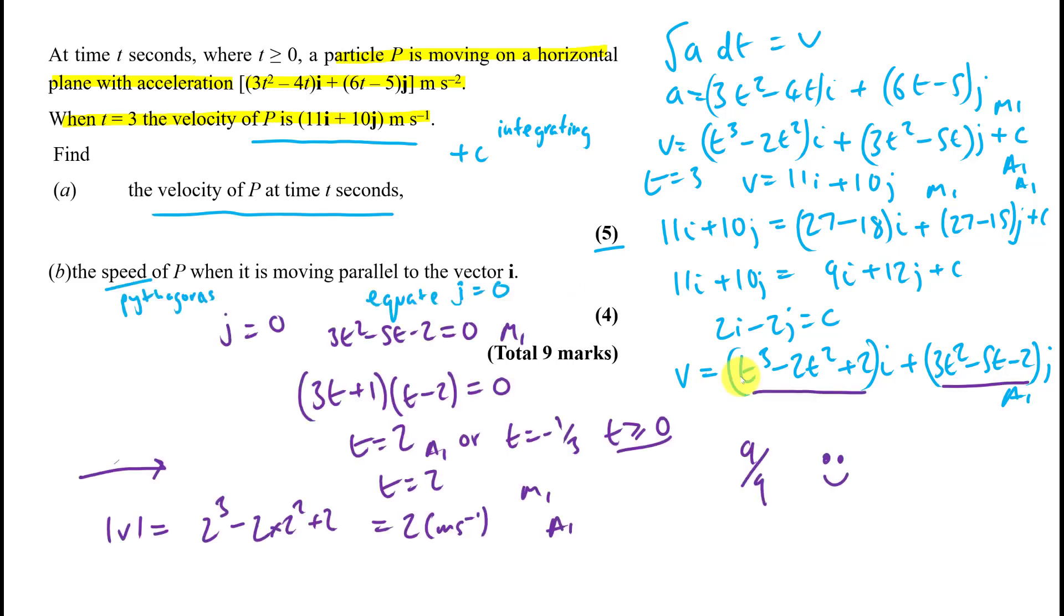Right, I'm just going to go through this question with the solution intact, because I believe you know how to do this now. Just key words to look out for. It says speed, so you might need to use Pythagoras. So the speed of p when it's moving parallel to the vector i. So parallel not perpendicular. So remember that quite well last time. It's parallel, so it's going in the same direction as i. So we need to equate j to 0, because there's no movement in the j direction going up. So that's this section here.